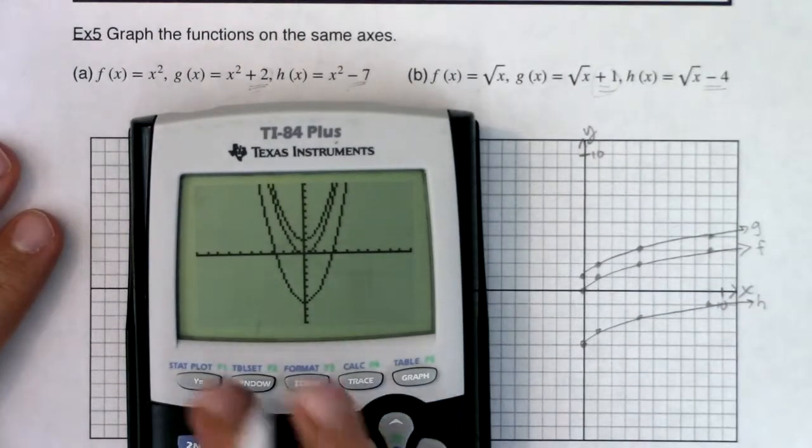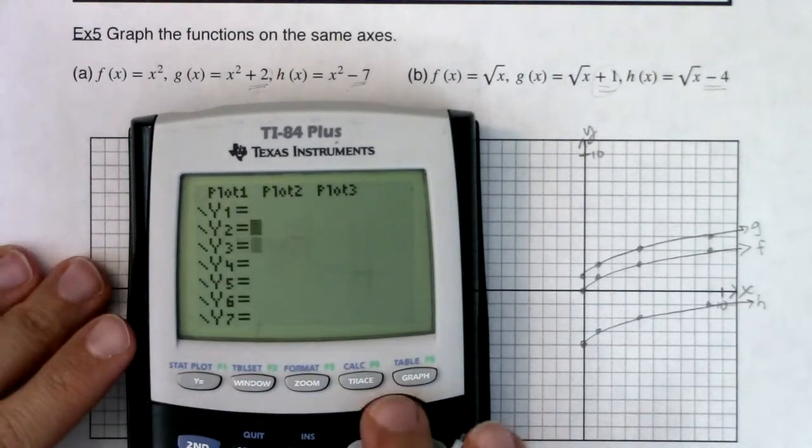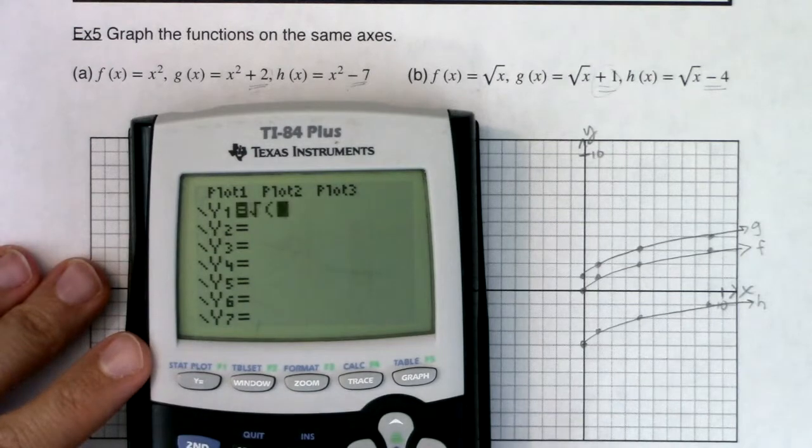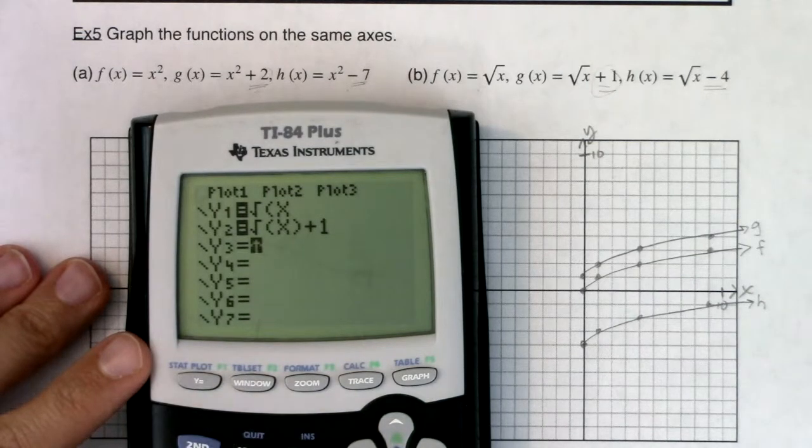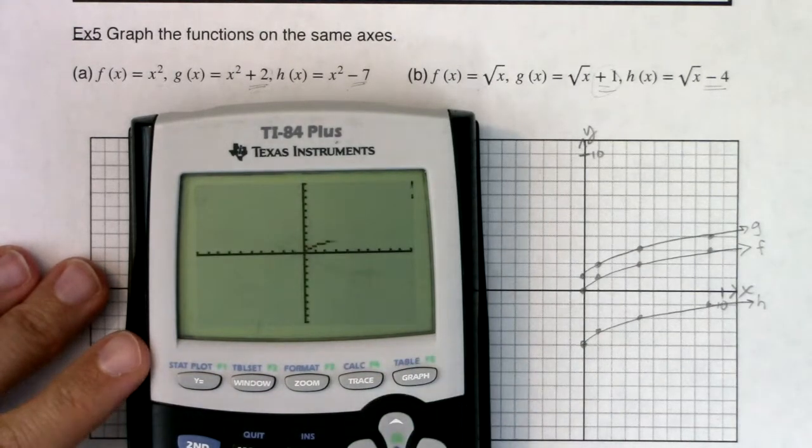Let's put in our toolkit function. Let's put in our square root of x plus one, and then the square root of x minus four. Oops, forgot parentheses. Excuse me. And I'm going to hit graph.